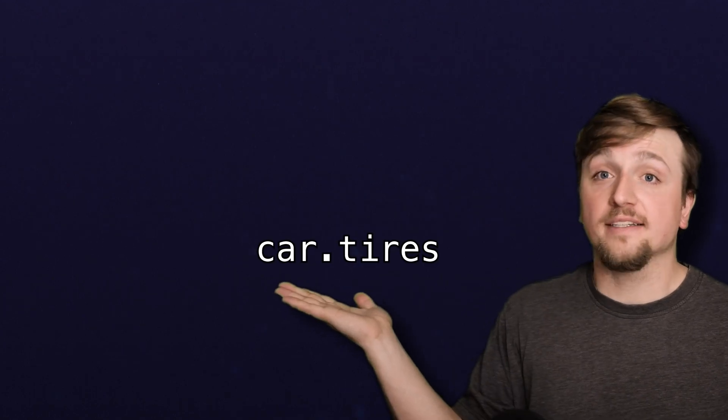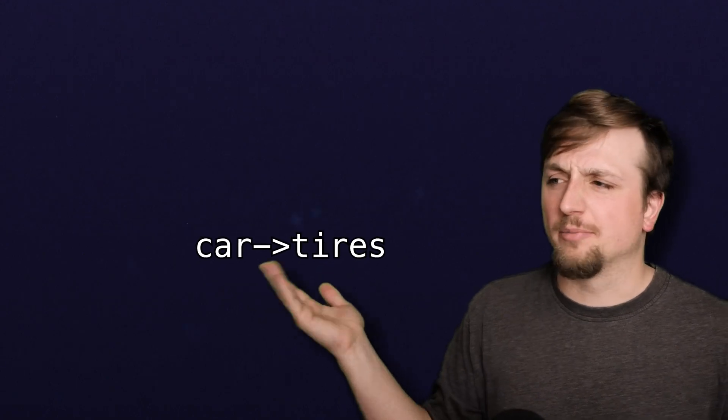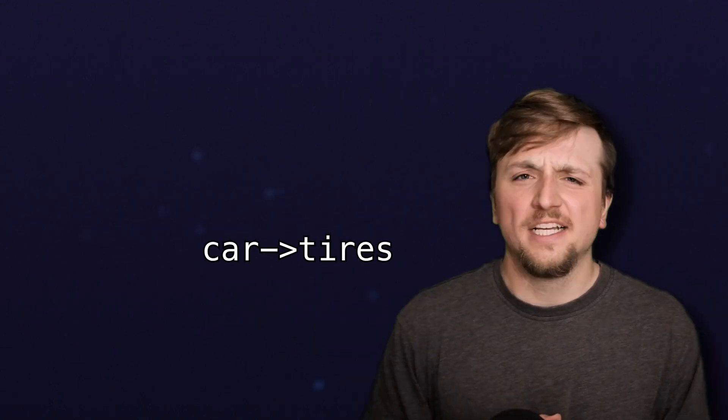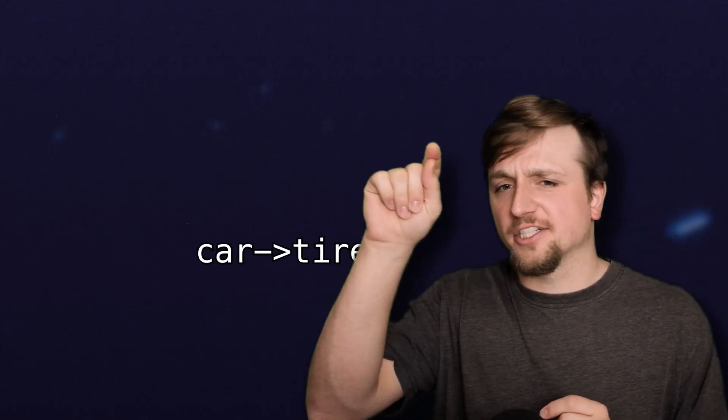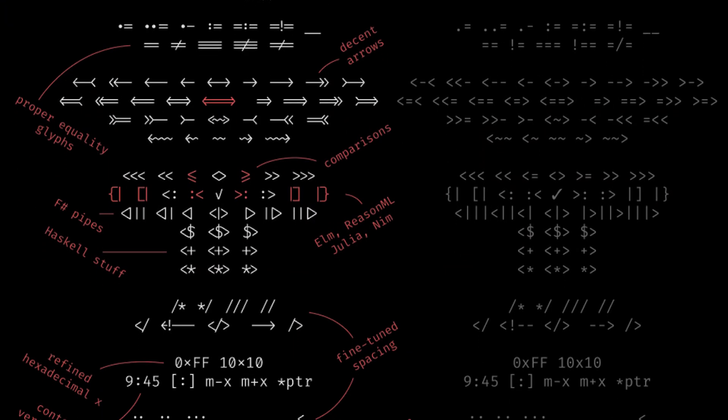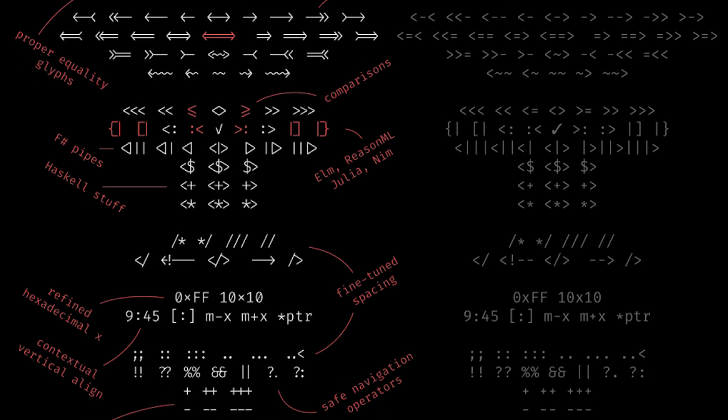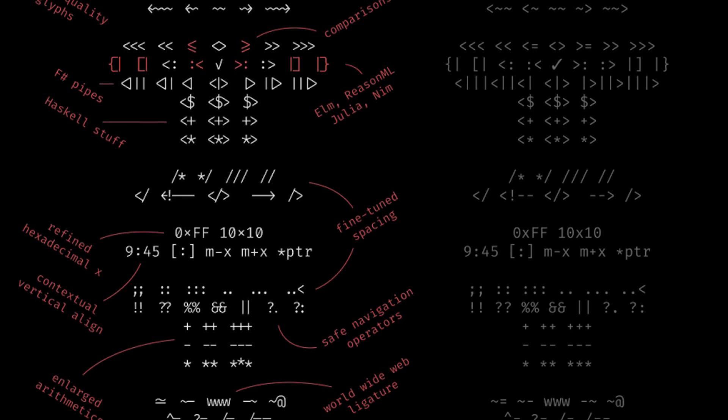You can access the fields of a struct with the dot operator, or if you have a pointer to the struct, then you can access them with the arrow operator, which is a dash and a greater-than sign — and if you have ligatures, it looks cool like a real arrow.